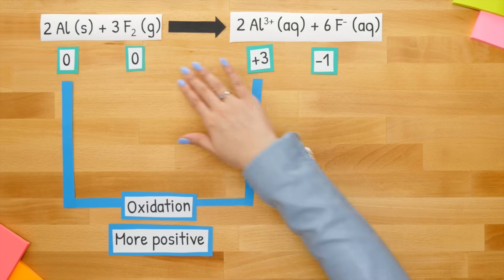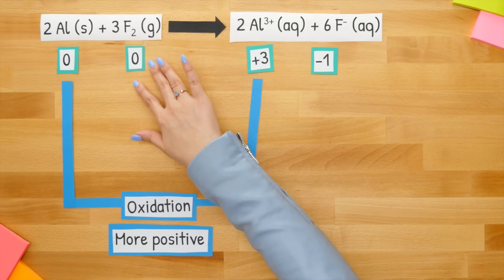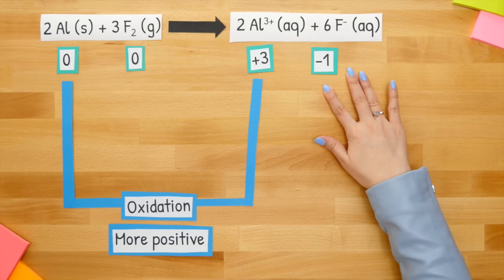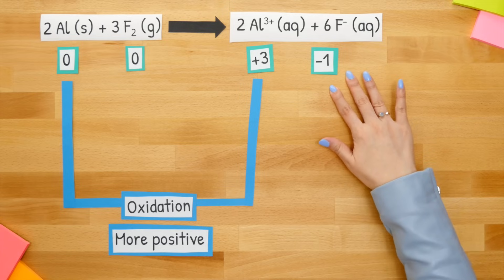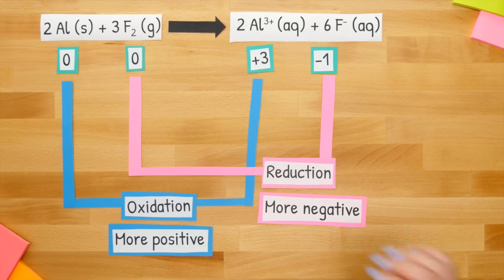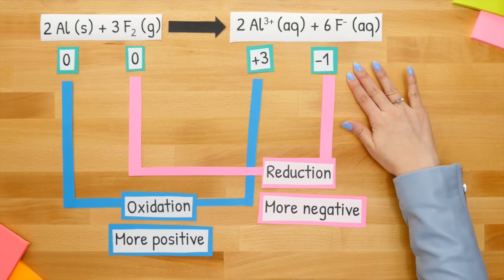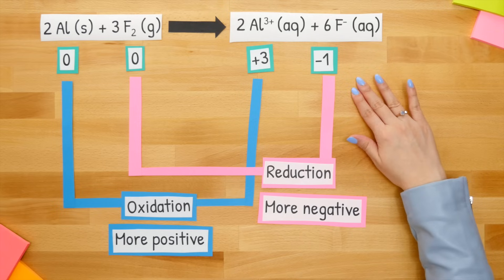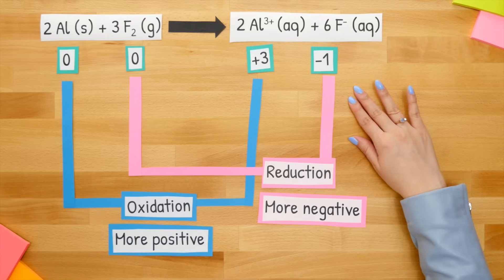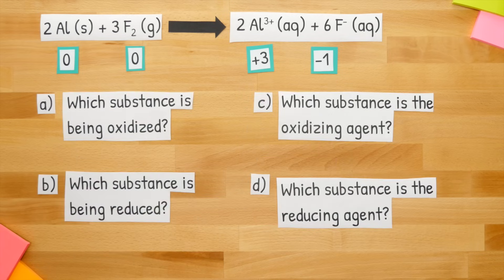Moving on to fluorine — we're going to go from 0 to a negative 1, so this is reduction. We know this is reduction because our oxidation numbers are becoming more negative, because we are gaining electrons. Now that we know which elements are involved in oxidation and reduction, let's go back to answering our questions.